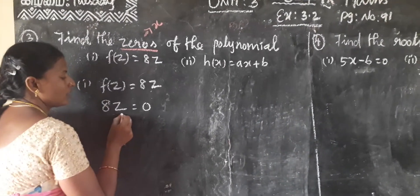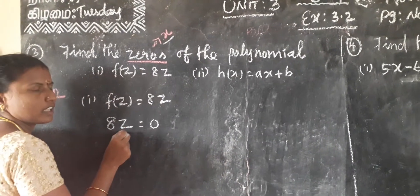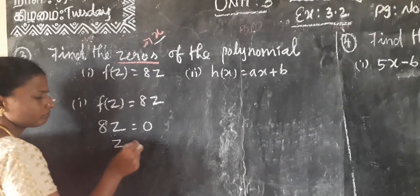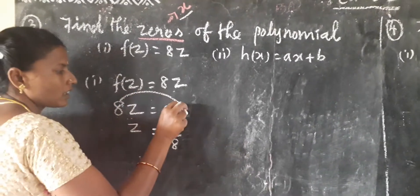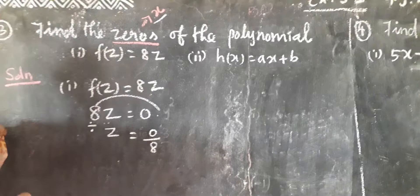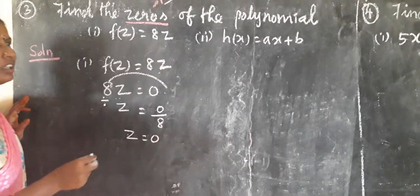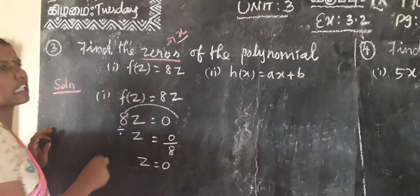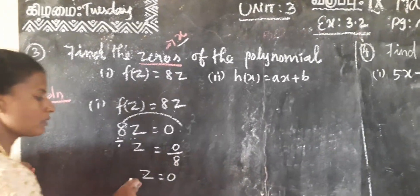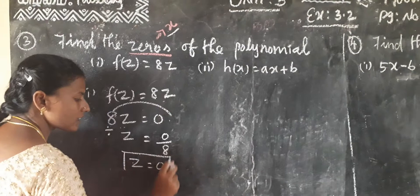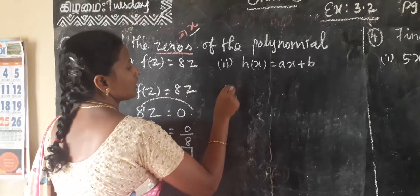So 8 into z equals 0. Our aim — zeros of the polynomial means we have to find out the variable value. The variable is z. This multiple 8 goes to the opposite side as a divide. 0 divided by anything is 0. So the zero of the polynomial is z equals 0. That is very easy.